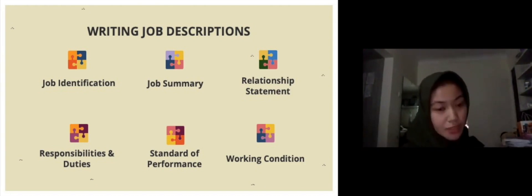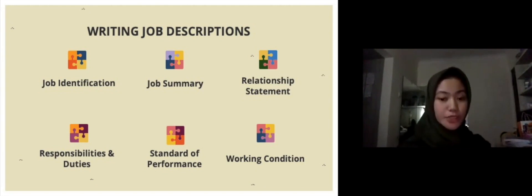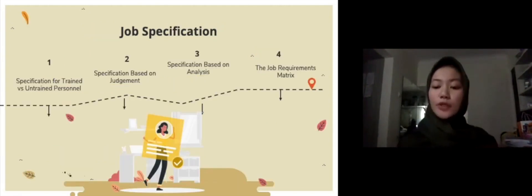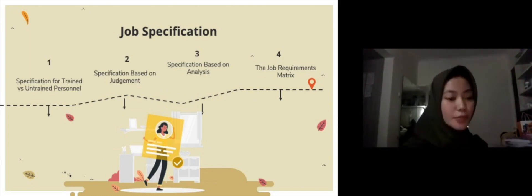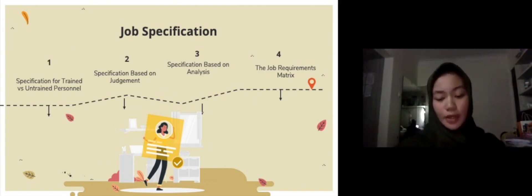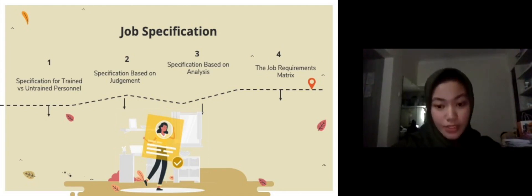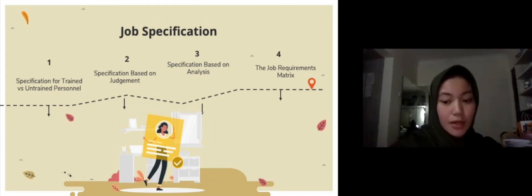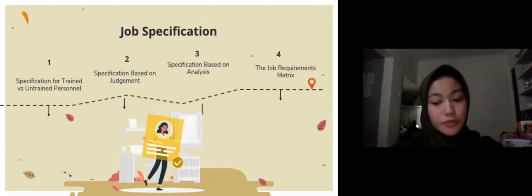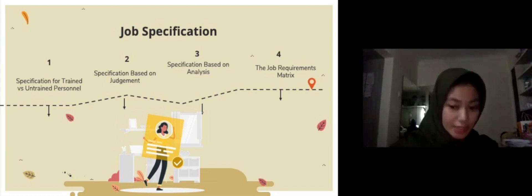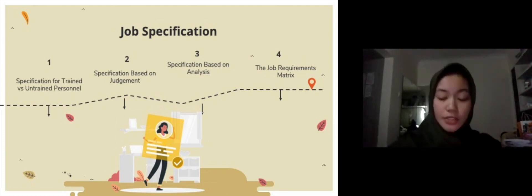Moving on to job specifications. The main question for job specifications is: what human traits and experience are required to do the job effectively? There are three types. The first is specification for trained versus untrained personnel. For trained personnel, the job specification tends to focus on factors such as length of previous service, quality of relevant training, and previous job performance. For untrained personnel intended for training, you must specify qualities such as physical traits, personality, interest, or sensory skills that imply some potential for performing the job or for trainability.